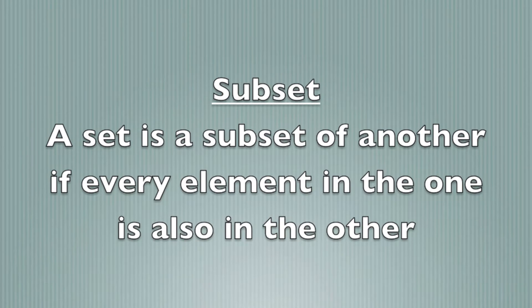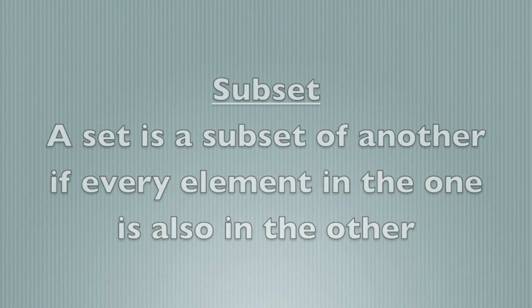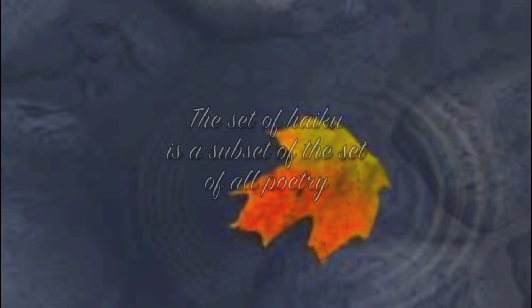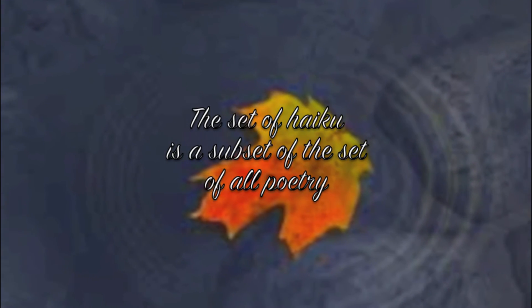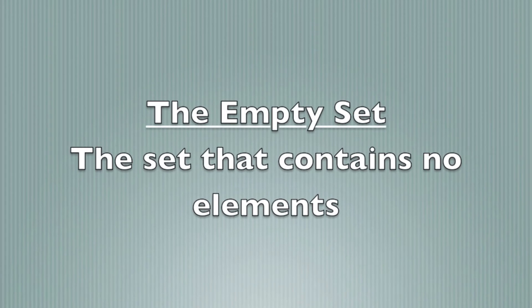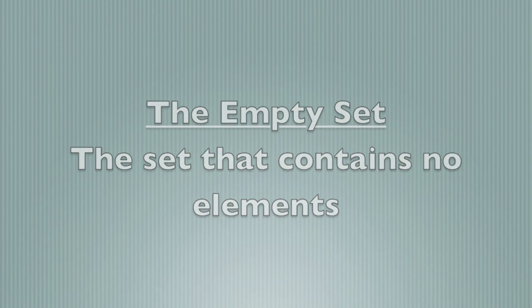A set is a subset of another set if every element in the first set is also an element in the latter. The set of haiku is a subset of the set of all poetry. There is one set that contains no elements — this is called the empty set.